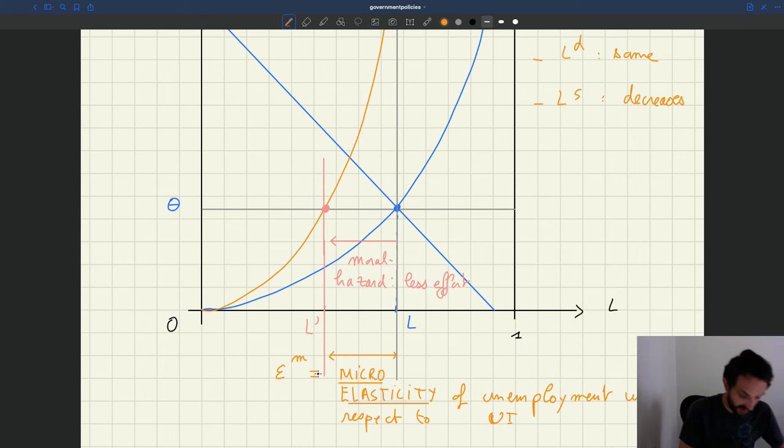How do we know that? Well, you can see that the new equilibrium in the labor market is not given at this point where the tightness is constant. The new equilibrium is given at the new intersection between supply and demand. So the new equilibrium is actually here.